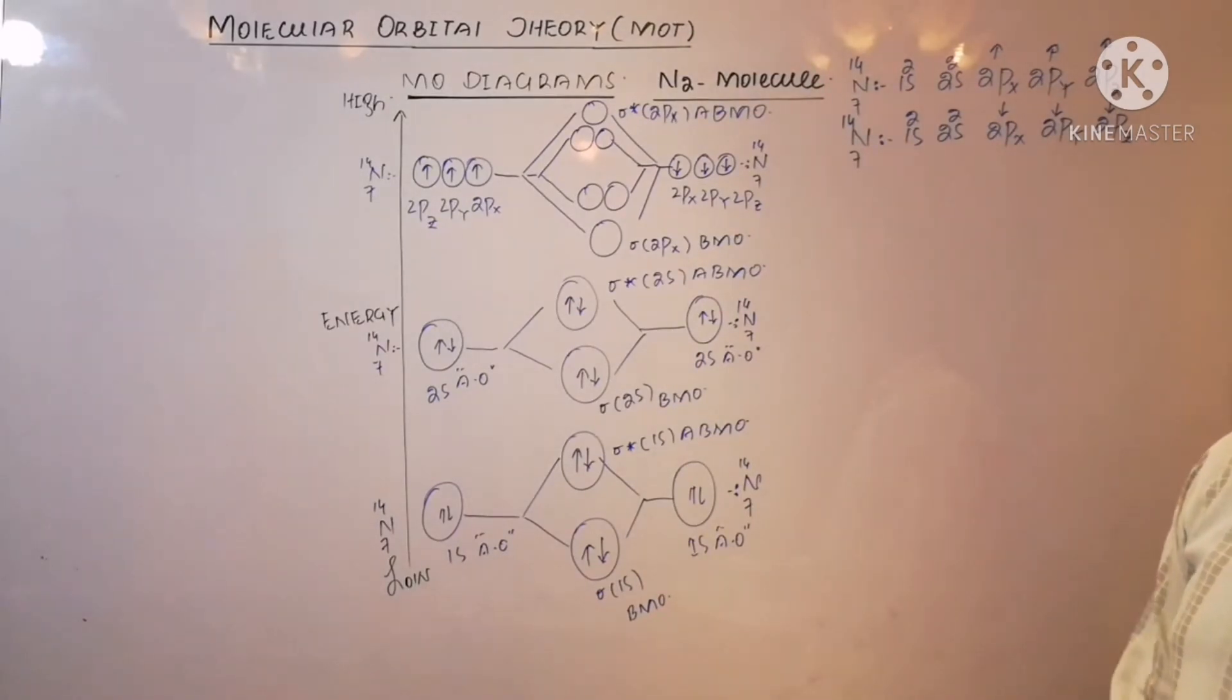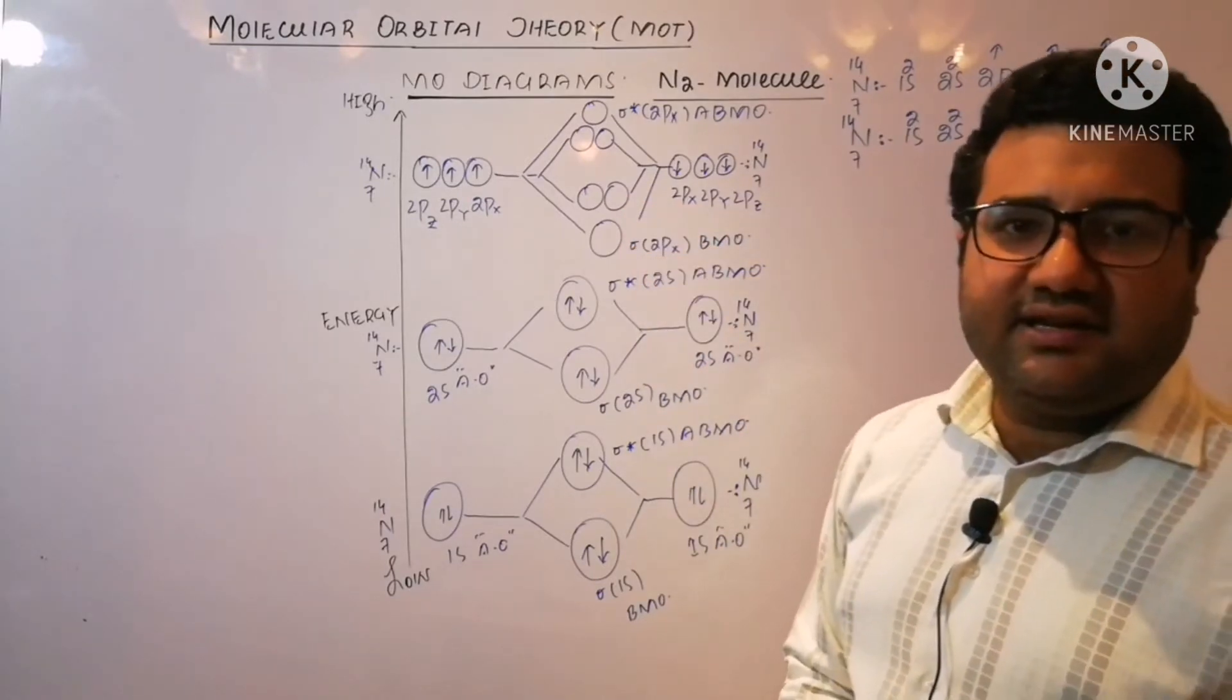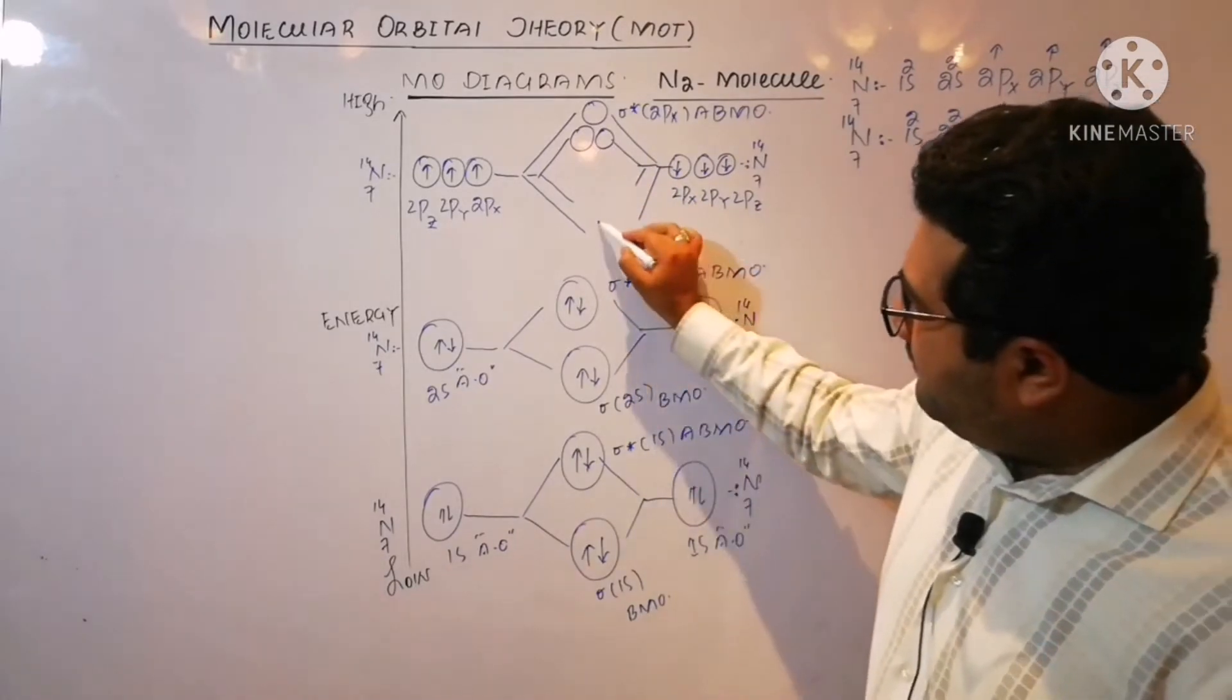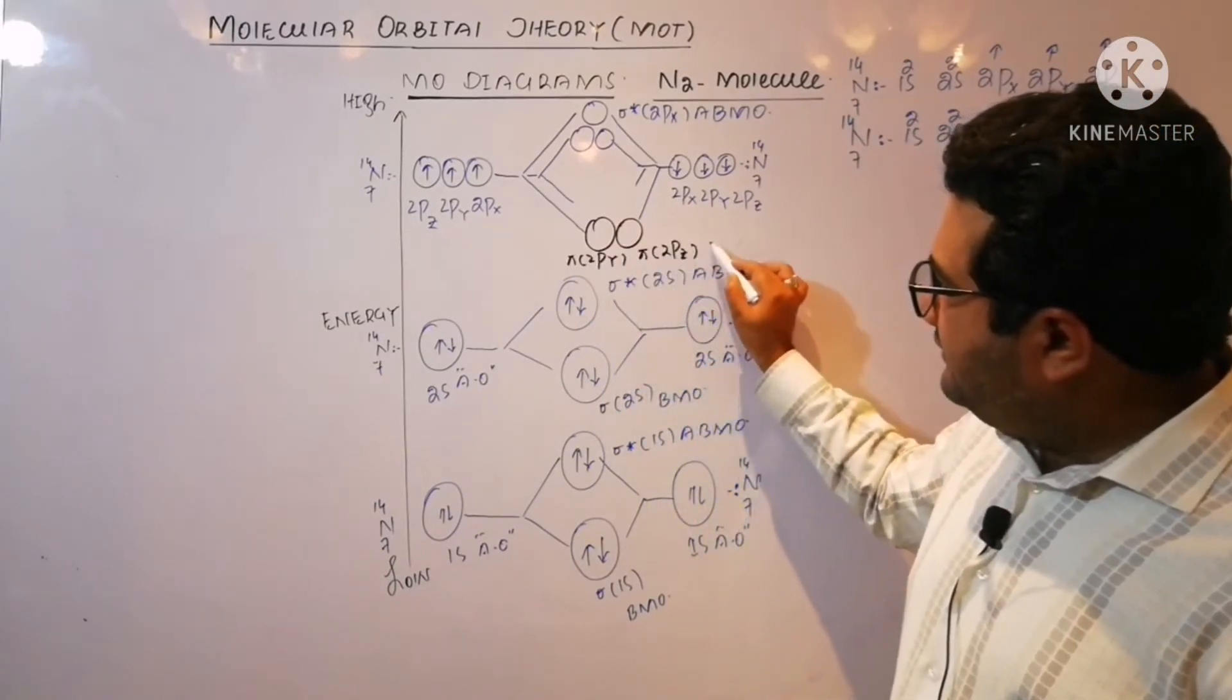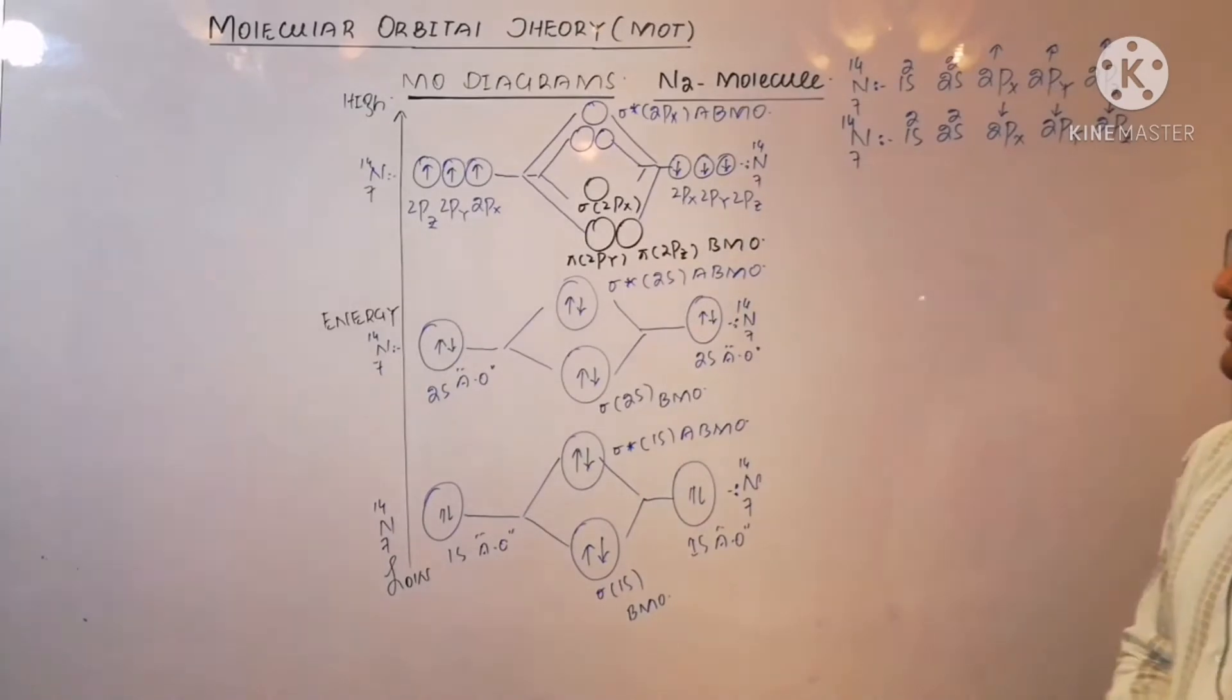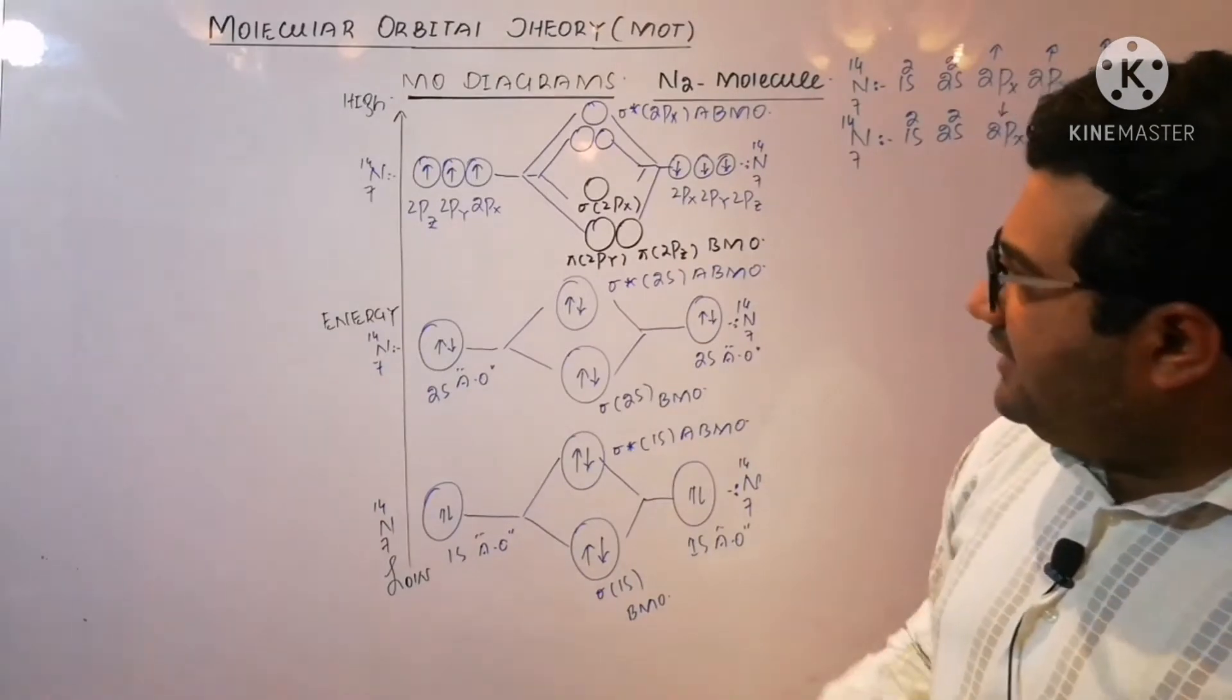But here in case of nitrogen, there is a very important point that you must keep in mind: this arrangement is wrong. The sigma 2px at the lower energy and pi 2py and pi 2pz at the higher energy—you cannot write it down like this. You will have to write it down in this version: that the pi 2py and pi 2pz bonding molecular orbitals should be at low energy, and the sigma 2px bonding molecular orbital should be at high energy. This one is a variation. Let me tell you in which molecules we will have to vary this order.